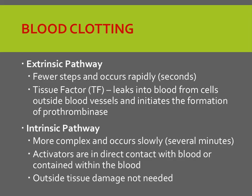Blood clotting occurs after the platelet plug has been formed. Blood clotting or coagulation is a series of chemical reactions that form fibrin threads. It is a complex cascade of enzymatic reactions with two different pathways: the extrinsic pathway or the intrinsic pathway. The extrinsic pathway has fewer steps and occurs rapidly within seconds, as tissue factor leaks into the blood from cells outside the blood vessels and initiates the formation of prothrombinase. The intrinsic pathway is more complex and occurs much more slowly, taking several minutes. Activators are in direct contact with blood or contained within the blood, and outside tissue damage is not needed for it to begin. Prothrombinase is formed after several reactions.